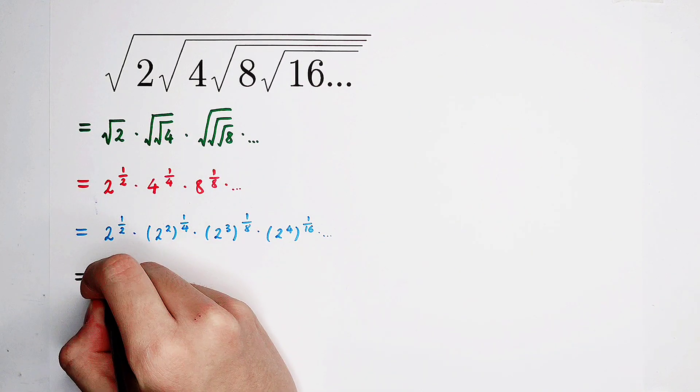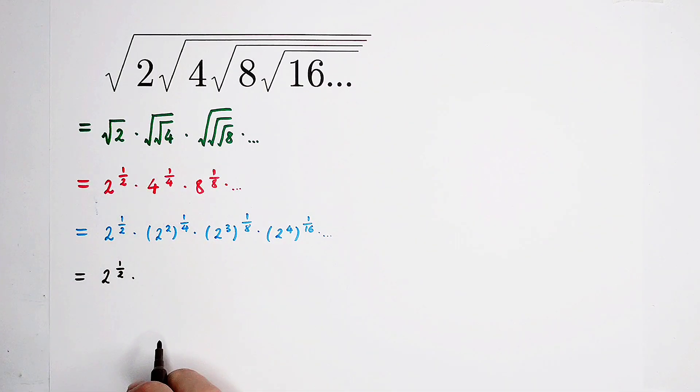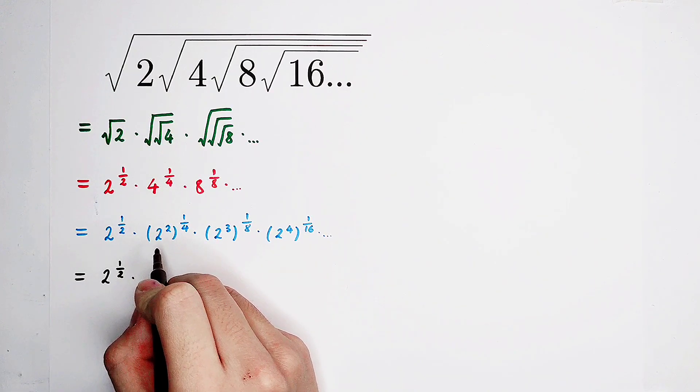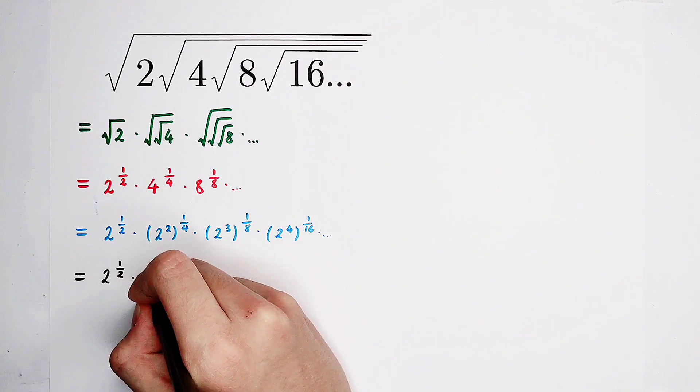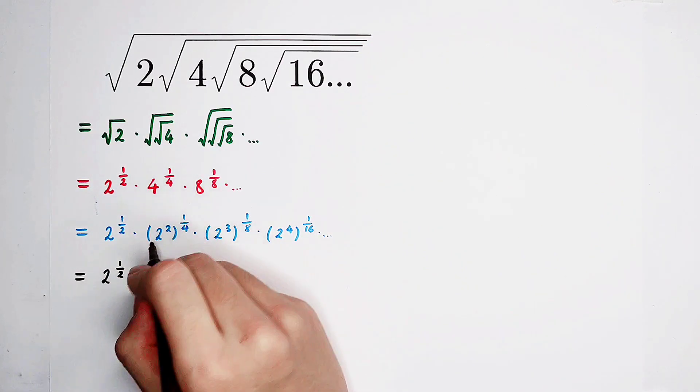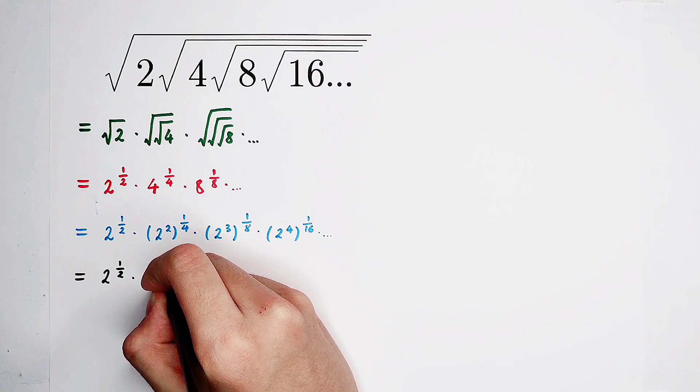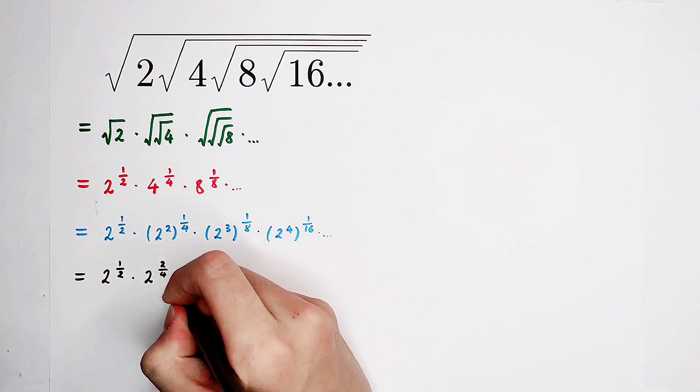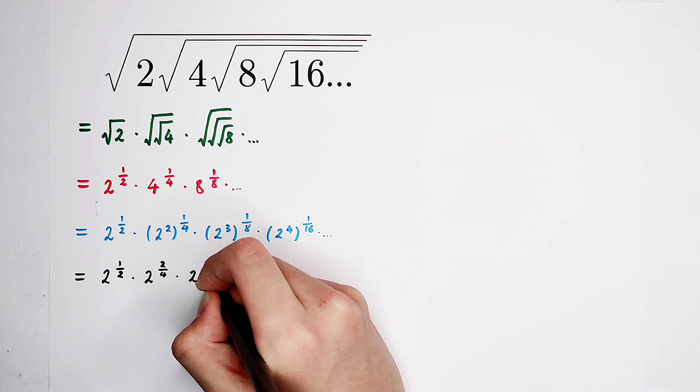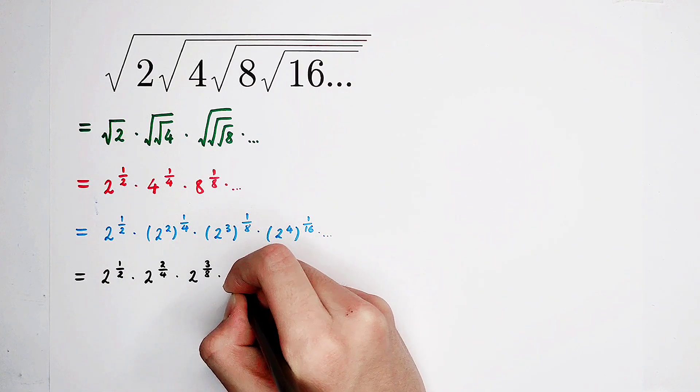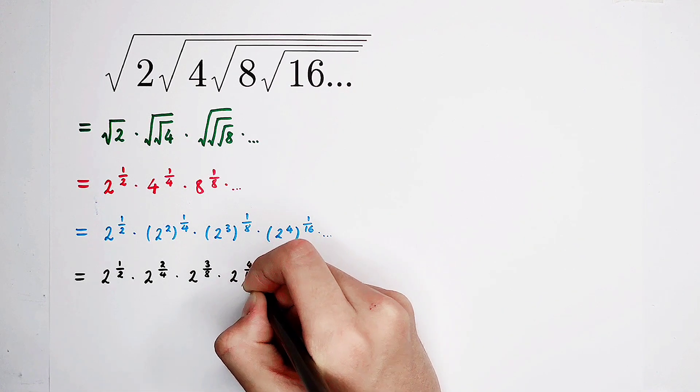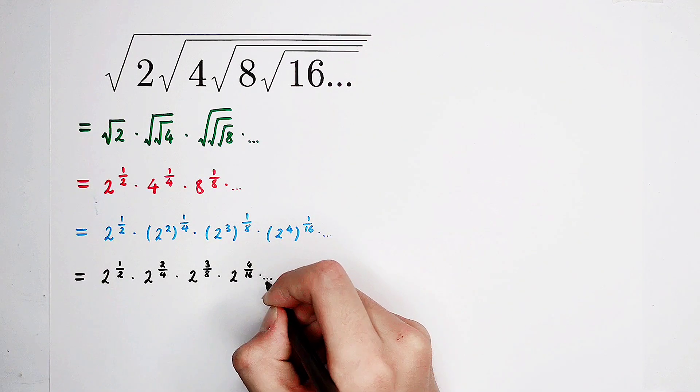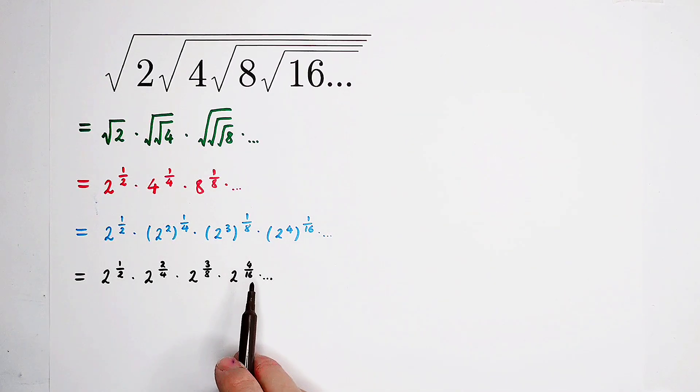So now, what I'm going to do is to use the exponential operation. A to the power of m also to the power of n is a to the power of m times n. So it is 2 to the power of 1 over 2, the first term, times the second one to the power of 2 times 1 over 4, it is 2 over 4. I'm not going to simplify it, but leave it. Then times 2 to the power of 3 over 8, and then times 2 to the power of 4 over 16.